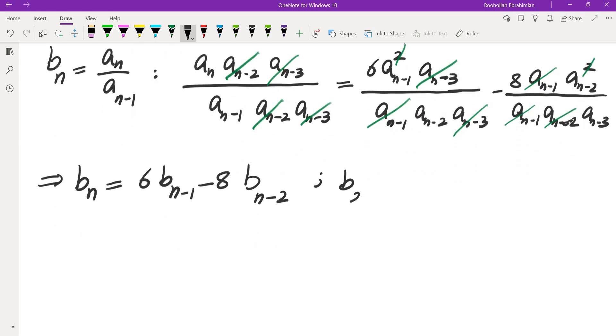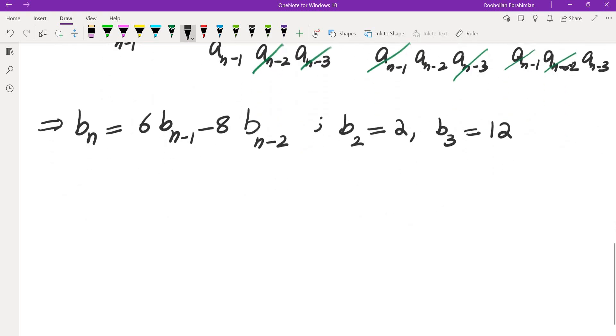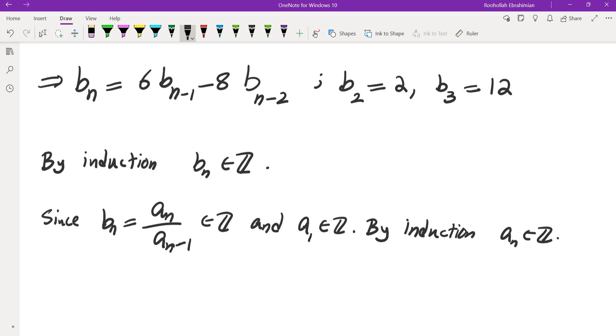And of course, I know B2, I don't have B1, I don't have A0, is 2. And B3 is going to be 12, it's 24 over 2. Now, by induction, clearly Bn is an integer. So by induction, Bn is in fact an integer. But we haven't shown An is an integer. How do we do that? Well, since Bn is equal to An over An-1 is an integer, and A1 is an integer, again by induction, we can deduce that An is also an integer.